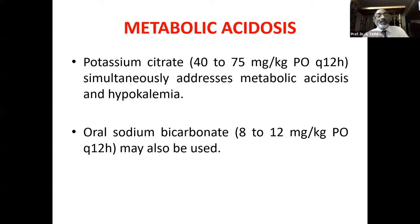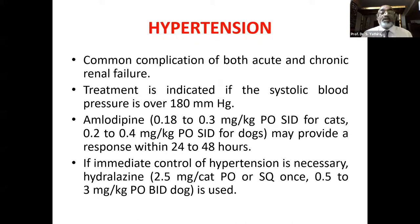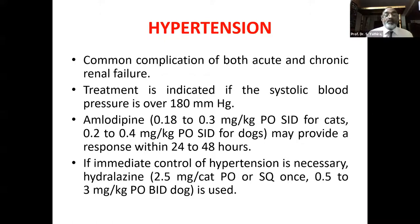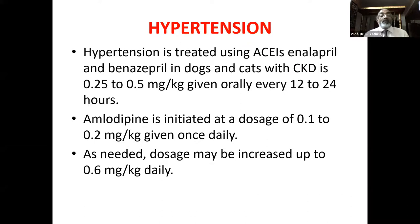Diet plays a major role: reduce protein, phosphorus, and sodium content. However, insufficient protein in the diet can also be detrimental — protein malnutrition can occur in renal failure. Supplement with B vitamins, which have a neutral effect on acid-base balance. Omega-3 polyunsaturated fatty acids and antioxidants are also beneficial. Commercial prescription diets play a major role here and have helped manage many CKD cases, as they balance palatability and nutritional requirements better than homemade diets.